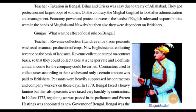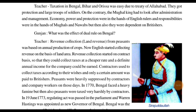Now we see the effects of the dual rule. The revenue collection — meaning land revenue — was based on annual production of crops. But the English started collecting revenue on the basis of land area: if you had a bigger area, you paid more tax. This changed the style of collecting revenue. The revenue collection started on a contract basis, so they could collect taxes at a cheaper rate and a defined annual income from the company could be earned.